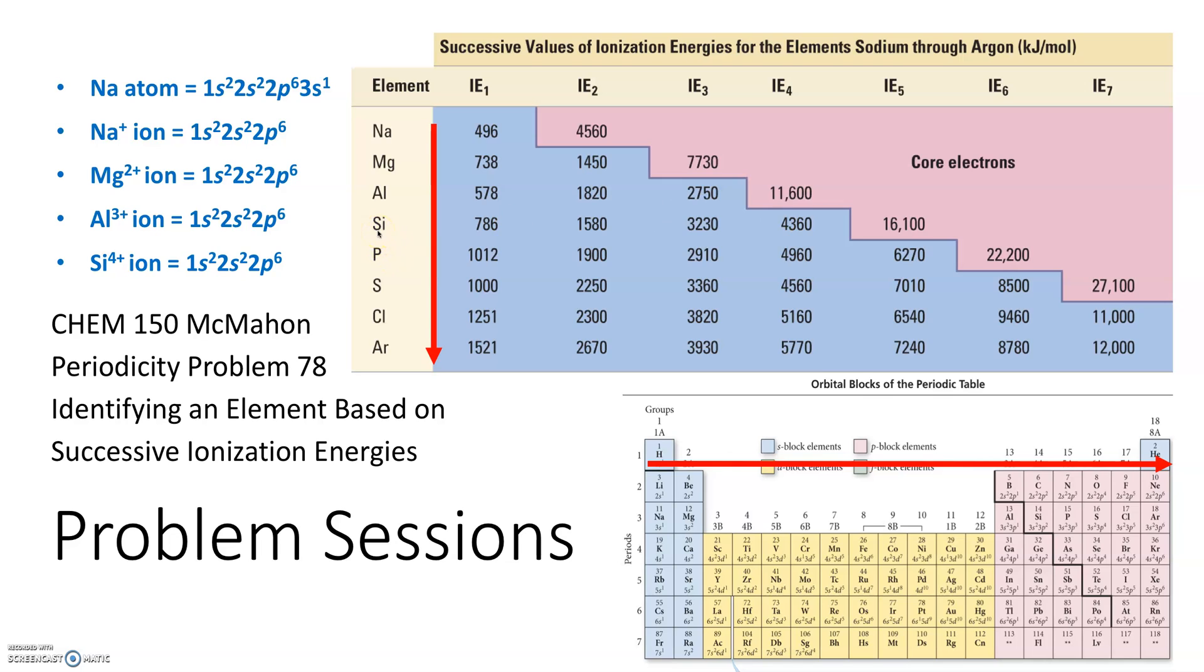Silicon typically is in covalent bonding, not ionic. It doesn't form ionic. And then when we get to phosphorus, sulfur, and chlorine, and argon, we see that there are huge jumps. Why? These want to gain electrons, not lose them.